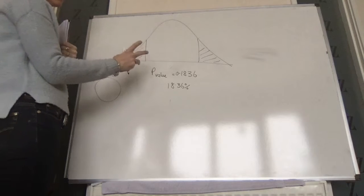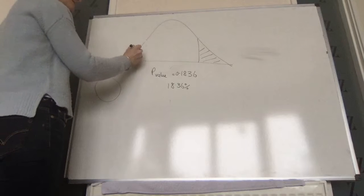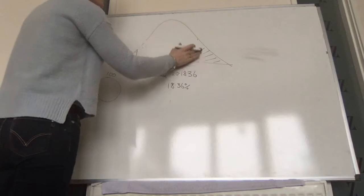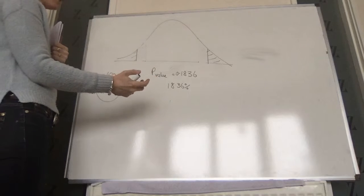We would never reject the null hypothesis on that. We would only reject the null hypothesis if that number was down at five percent, because if that number is at five percent, what we're saying is only five percent of our sample means should be in that area.